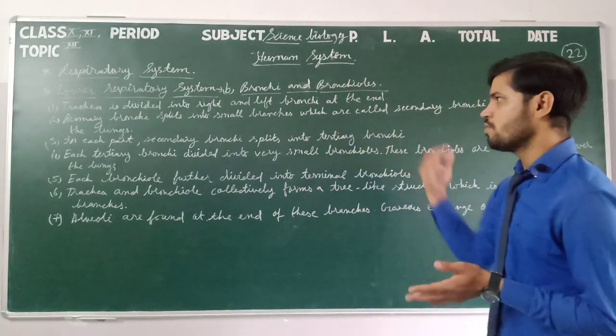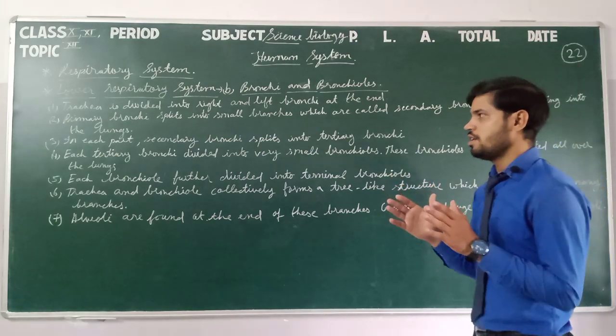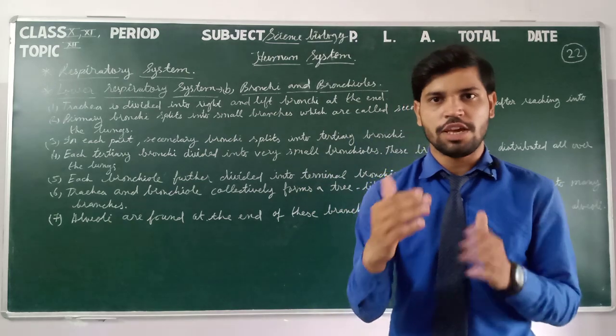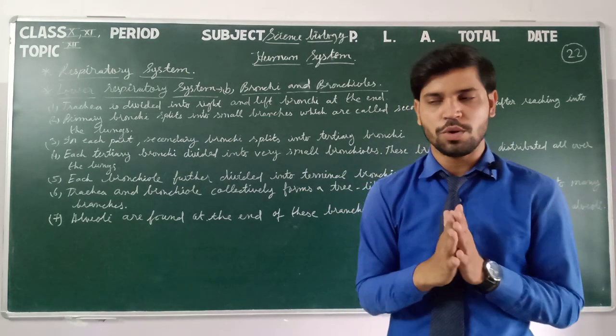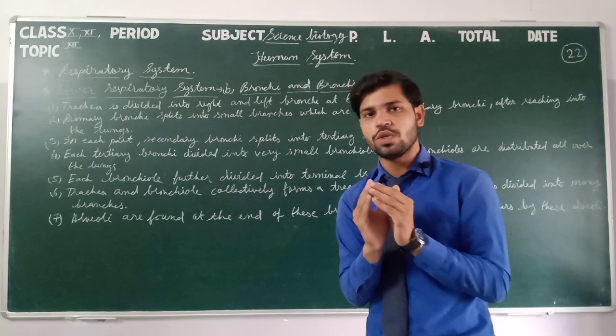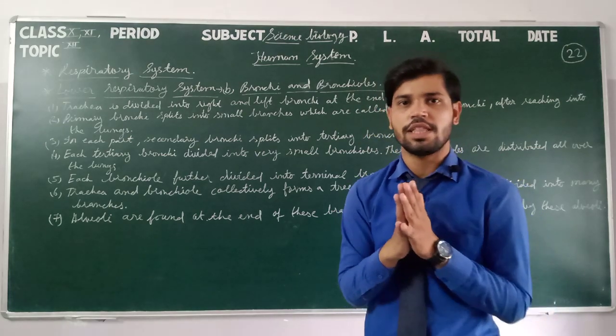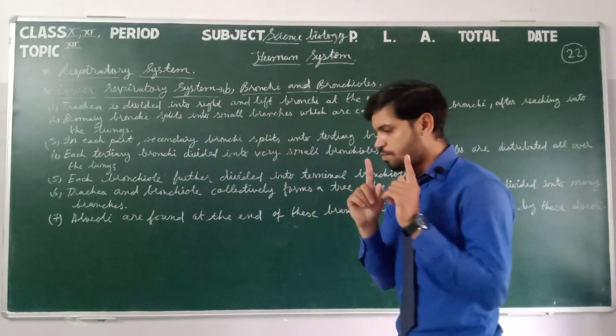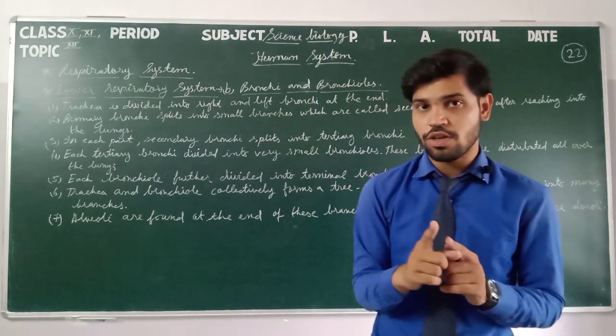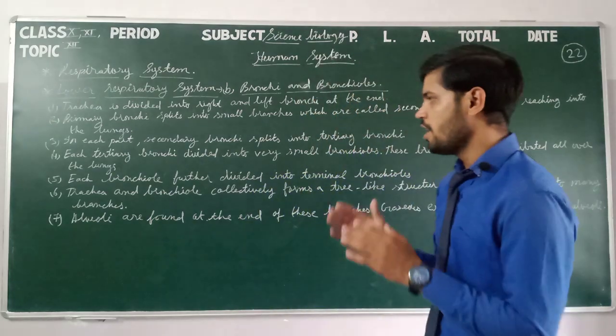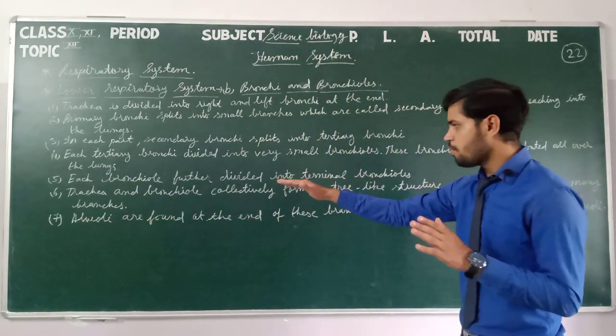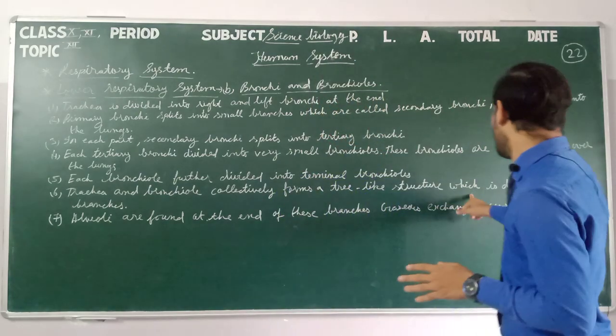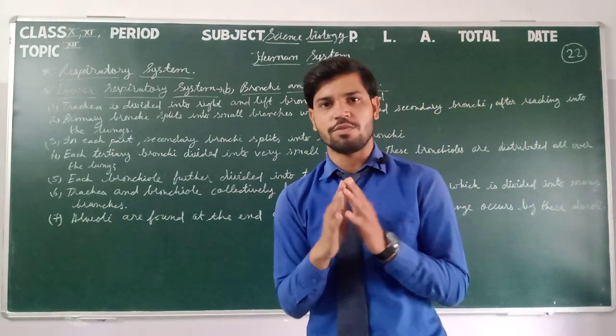Primary, secondary, tertiary bronchi, then bronchioles distributed all over the lungs, further dividing into terminal bronchioles which branch into many divisions.